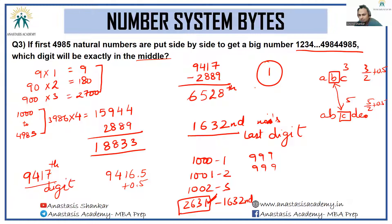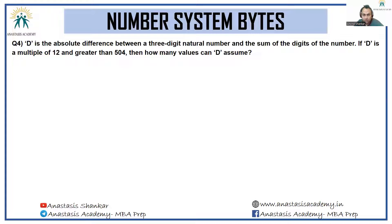That was an amazingly well thought out and reasoned question — not something you'd typically expect in an exam. Next: if D is the absolute difference between a three-digit natural number and the sum of its digits...